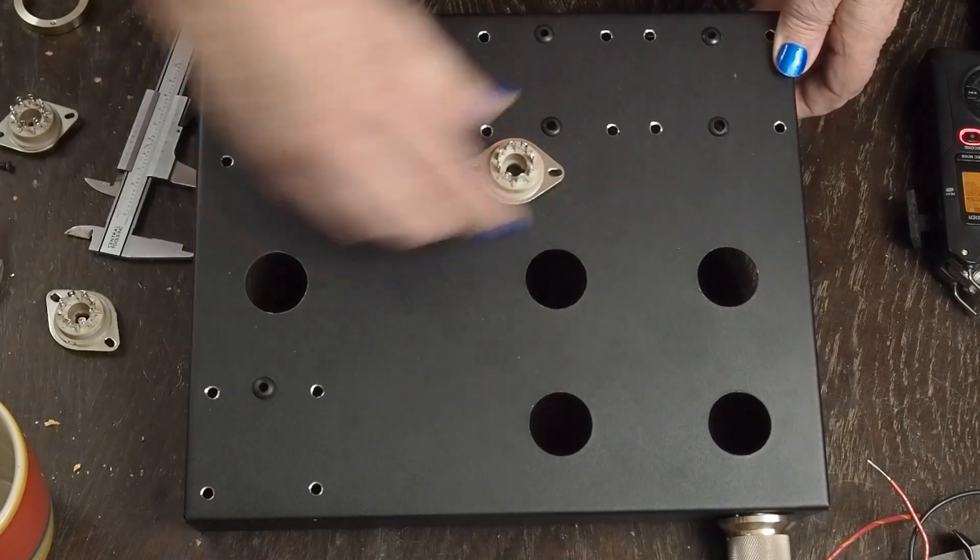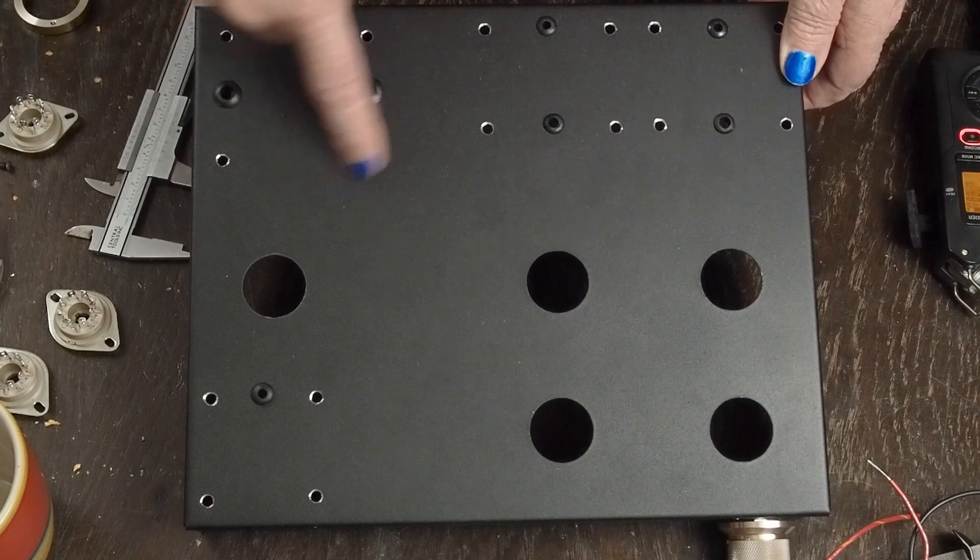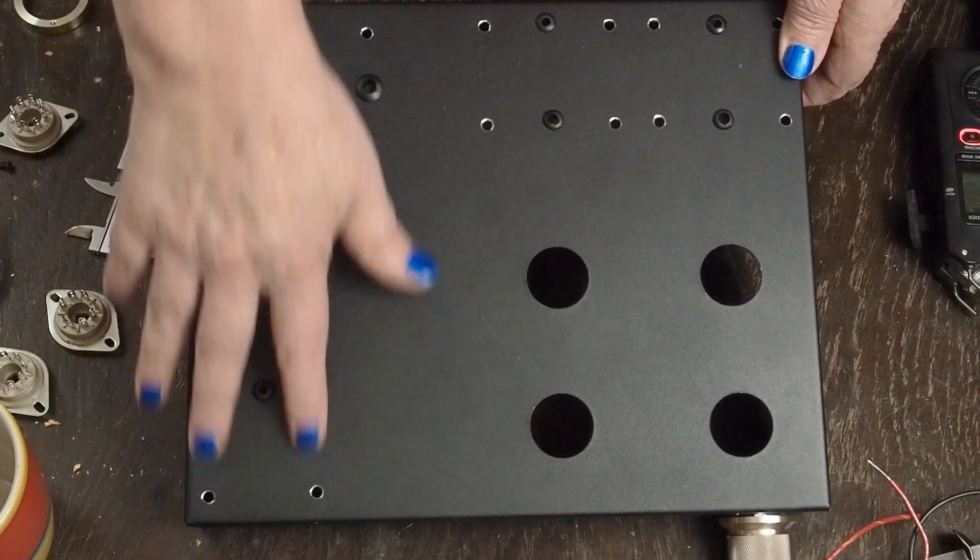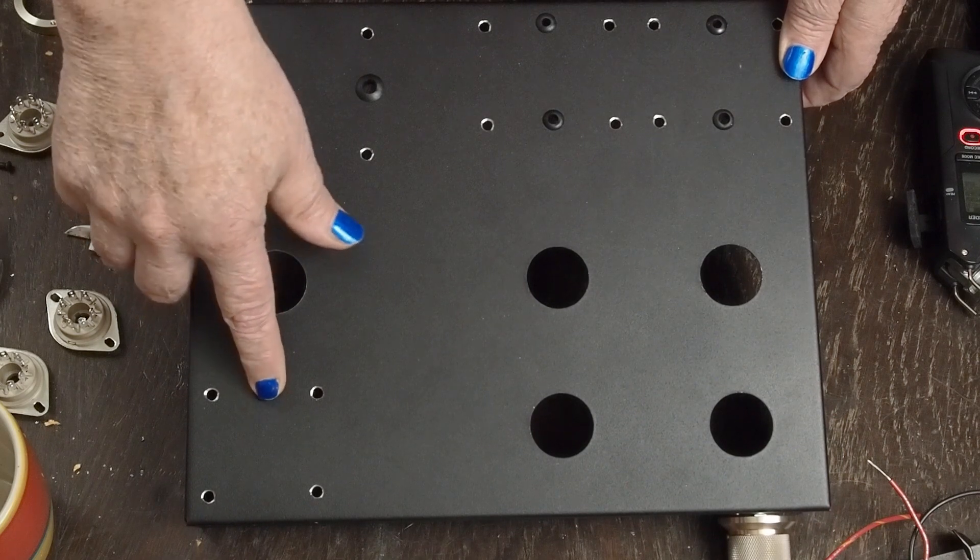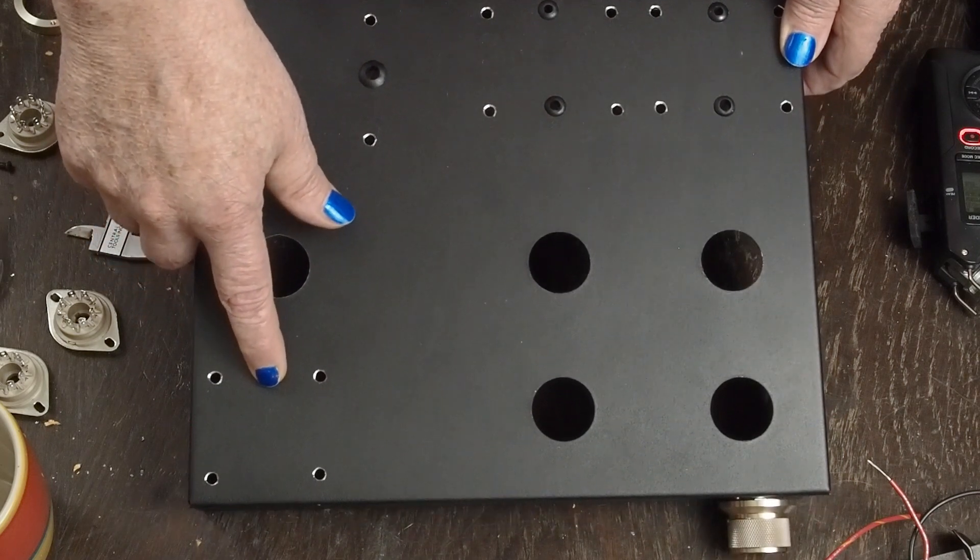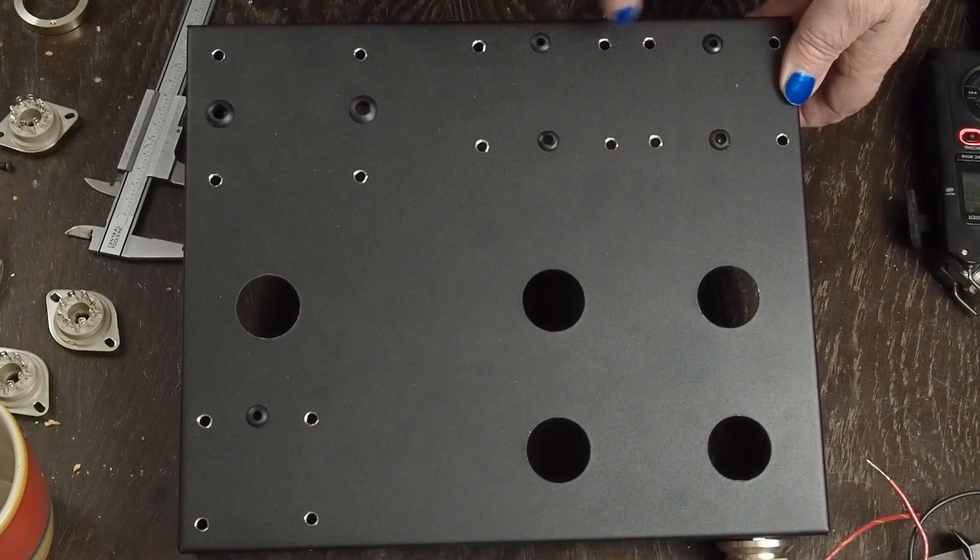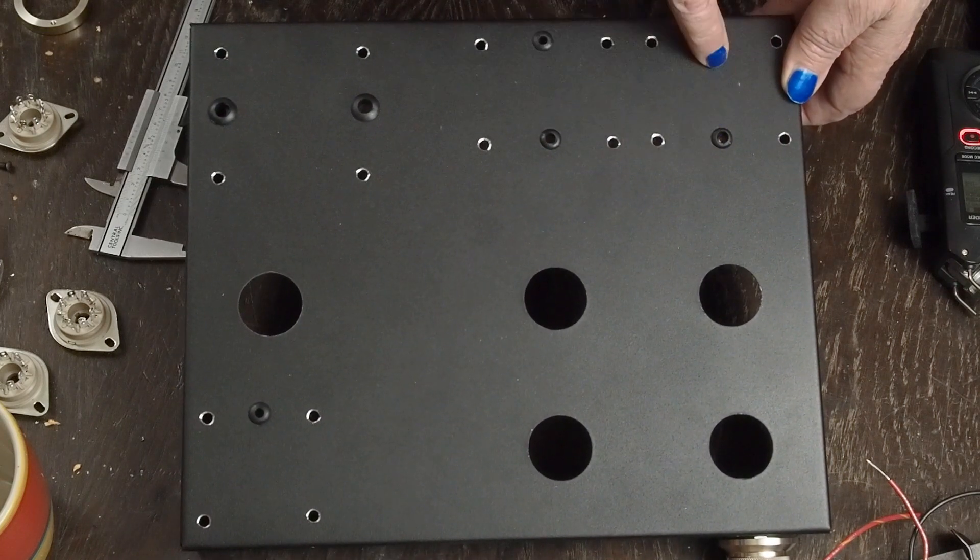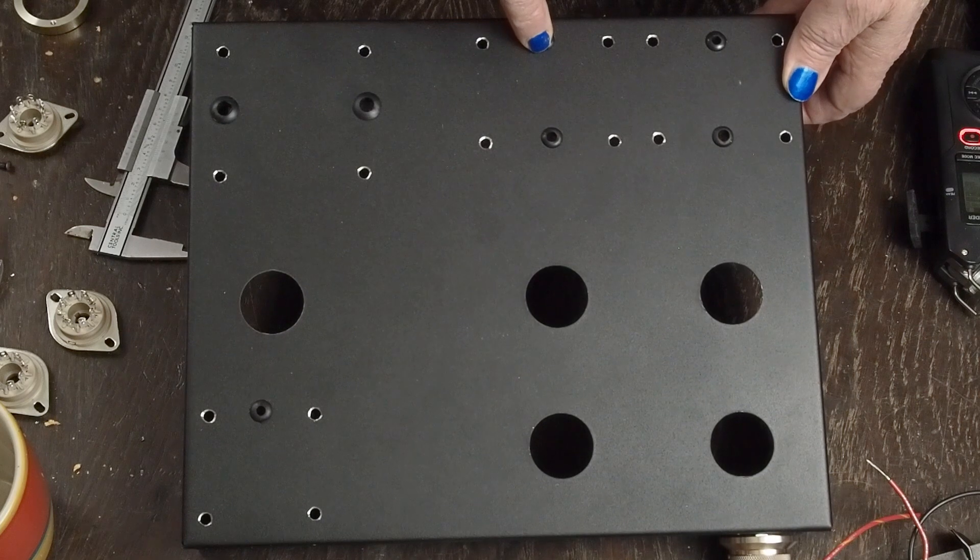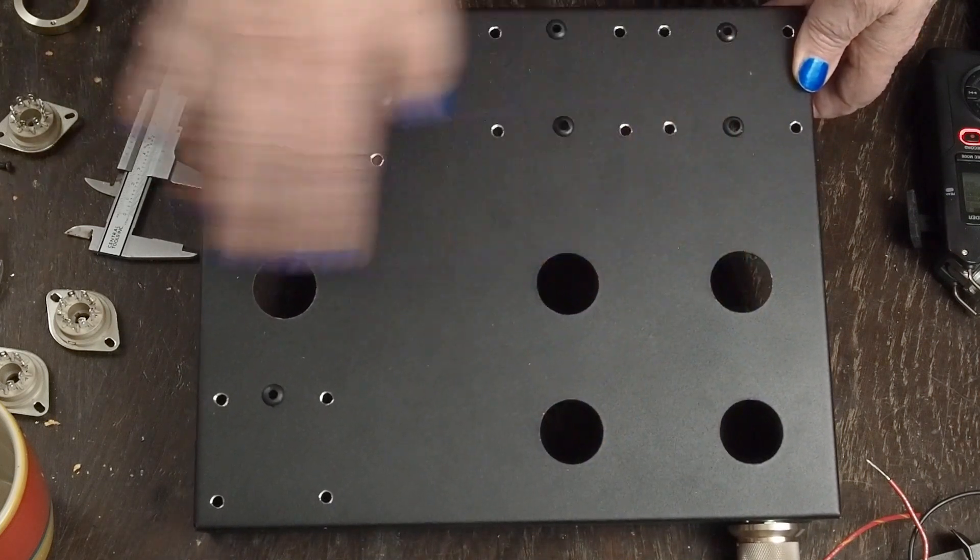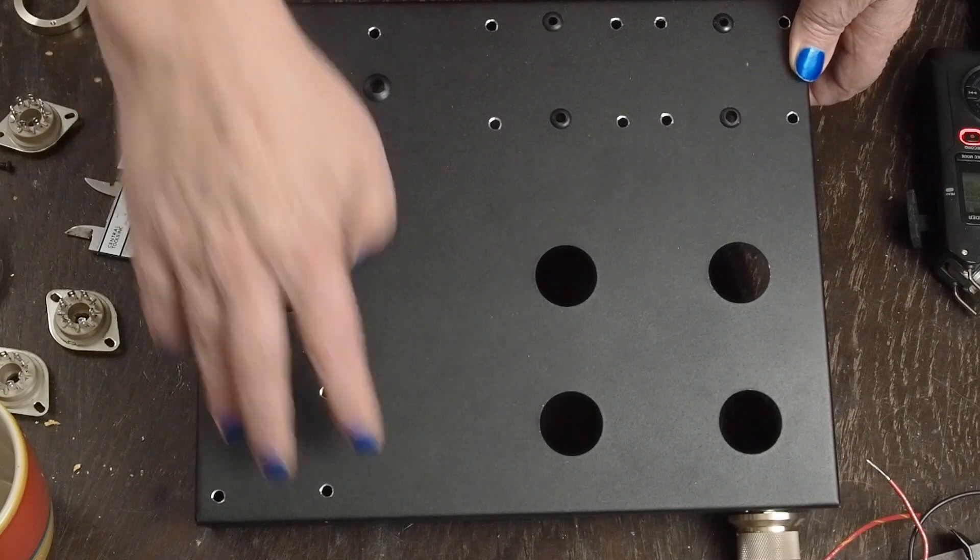Power transformer goes over here with two grommets. Choke goes in the front with a grommet in the back for the wires to go through. Then here are the two ED core output transformers with grommets for the wires to go through.